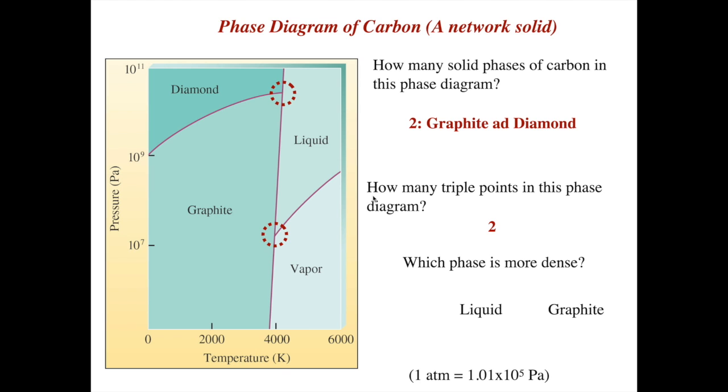If you have liquid versus graphite, liquid carbon versus graphite, which is more dense? Well, again, I always think if I'm close to this line, if I'm on the graphite side, and I increase the pressure, I won't cross the line because the slope is positive. If I'm on the liquid side, and I do this just right at the right temperature, I could potentially cross the line and make it turn into graphite. So that tells me graphite is more dense.